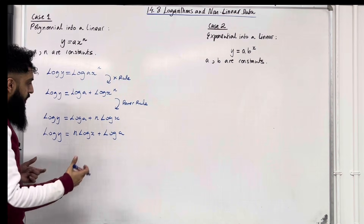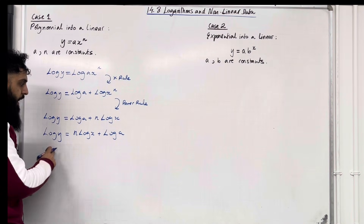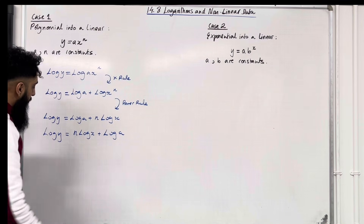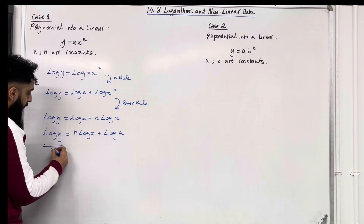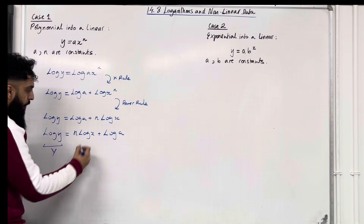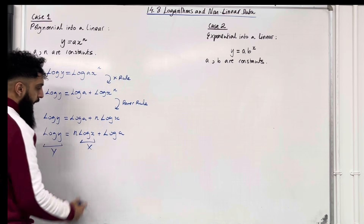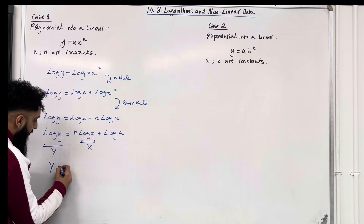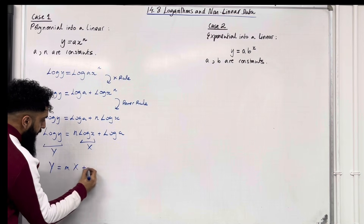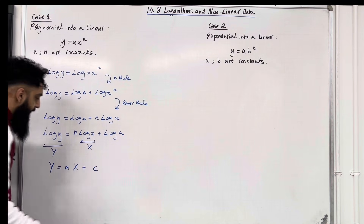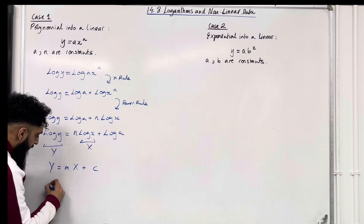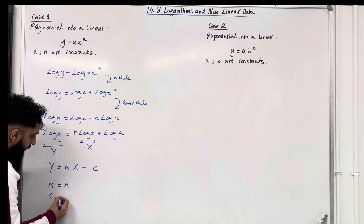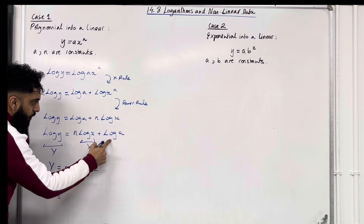Rewriting as log y equals n log x plus log a, the variables are log y and log x. Calling log y capital Y and log x capital X, we get Y equals mX plus c — the standard linear form. The gradient m is equal to n, and the y-intercept c is equal to log a.